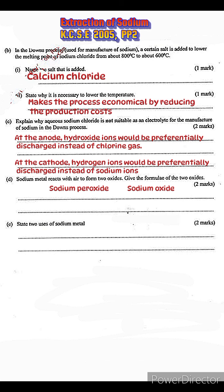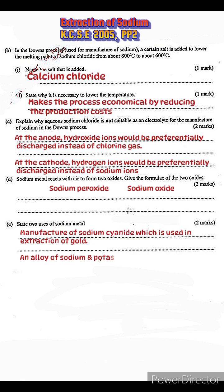State two uses of sodium metal. Sodium is used to create certain compounds like sodium cyanide, which is used in the extraction of gold. An alloy of sodium and potassium is also used as a coolant in nuclear reactors.